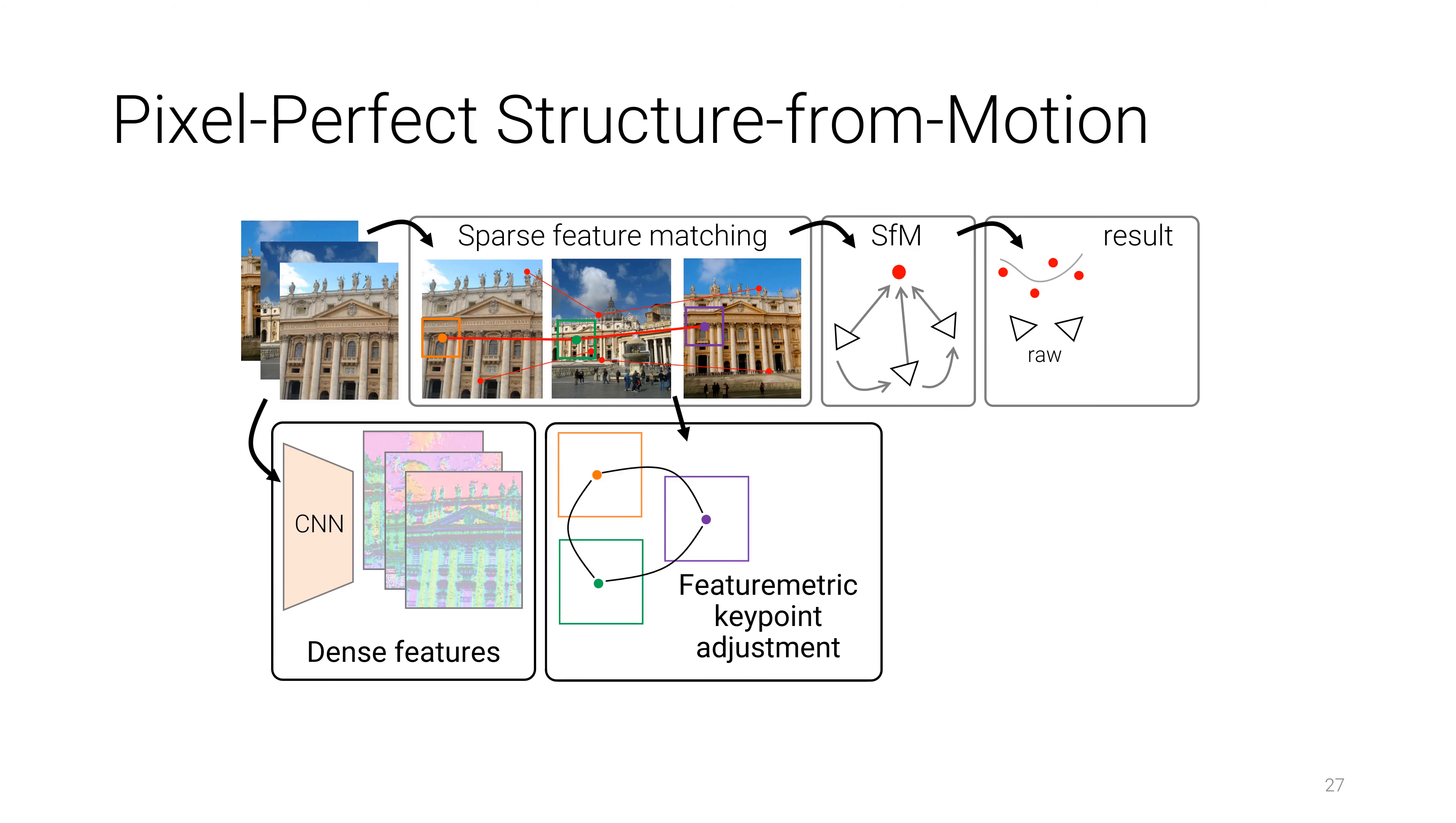In featuremetric keypoint adjustment, we align deep features on the tentative matches graph to refine initial detections jointly over multiple views by direct optimization. The refined keypoints are forwarded to the standard SFM pipeline to estimate a 3D reconstruction.